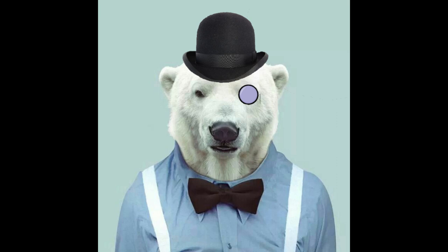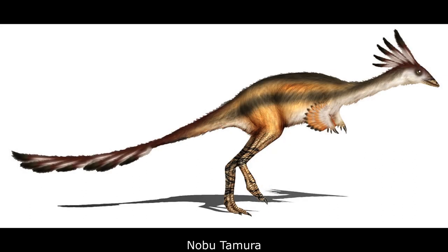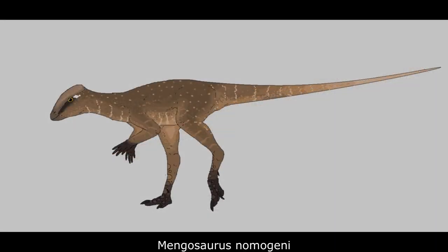More uniquely Asian Paleocene dinosaurs include a number of curiously small basal forms. These include a relative of the diminutive oviraptorosaur Avimimus from the Domu Formation, 60 to 58 million years ago, that has yet to be named; the tiny alvarezsaur Leptocursor singularis, the only alvarezsaur known from the northern continents during the Paleocene; and a small, very basal pachycephalosaur from Inner Mongolia, Mengosaurus nomogenii. Both the Avimimus relative and Mengosaurus, while rare and marginal in their own time, would go on to produce many successful lineages later in the Cenozoic.